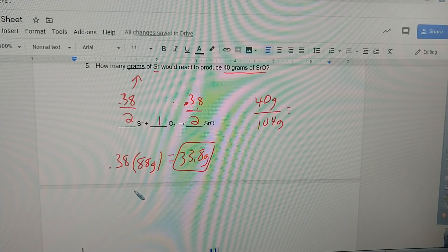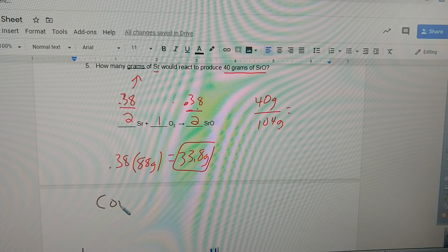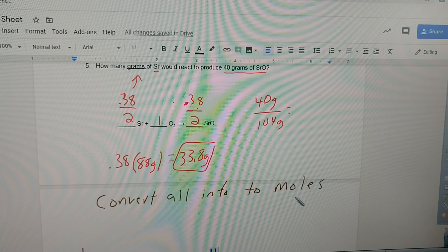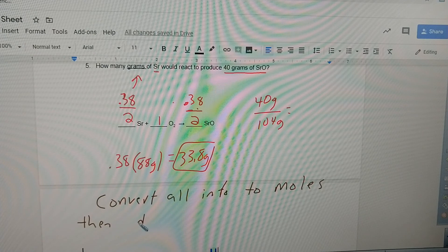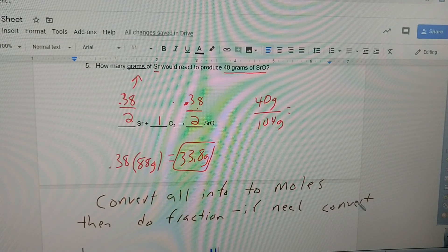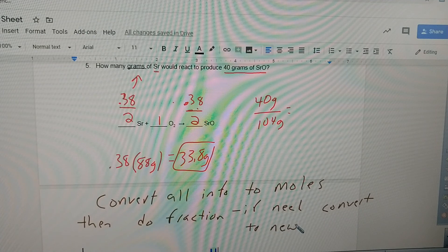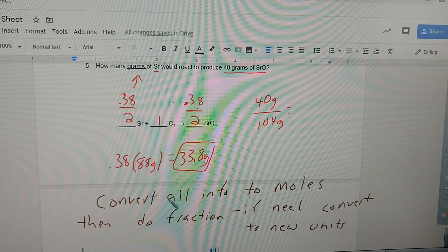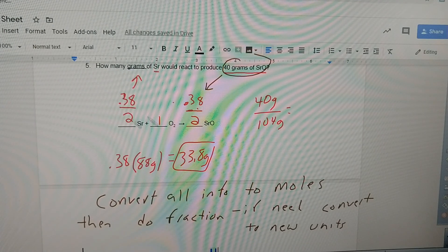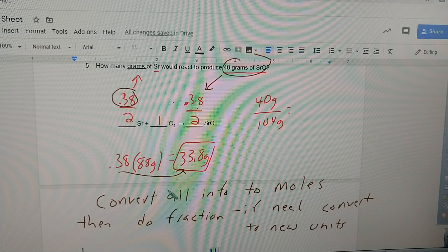So people, what is the secret? The secret is this: convert all the information to moles. Then you can do the fraction. And if you need to, if needed, convert to new units or whatever units they're asking you for. We converted the information, we converted 40 grams to moles, we put it there. Then we did the fractions, make them even. And then the third thing we did was we converted our answer back to grams. That's all there is to it.